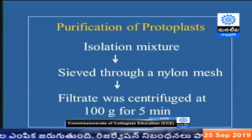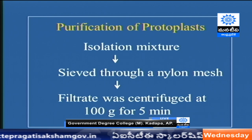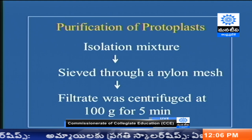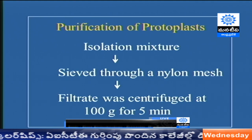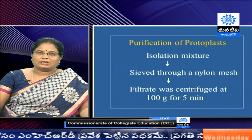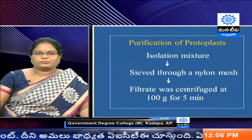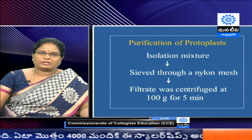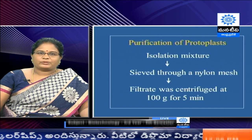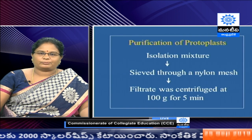Once protoplasts are released from the cells, we isolate them from the mixture. All contents in the mixture are filtered through a nylon mesh of a particular pore size. The filtrate is then centrifuged at very low rpm — 100 g for 5 minutes. We can discard cell wall debris and preserve the protoplasts. Immediately after pelleting, we wash the protoplasts again to remove any fine debris, then centrifuge once more at 100 g for 5 minutes at 4 degrees centigrade. Now we are ready with the protoplasts.